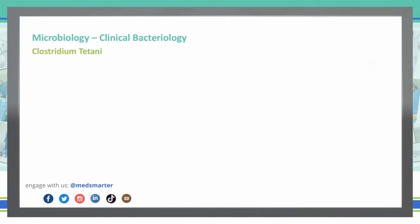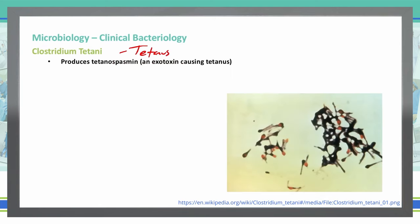First, we will talk about Clostridium tetanii. Clostridium tetanii is also known as tetanus, and it causes a tetanospasm. This is due to an exotoxin that causes tetanus.